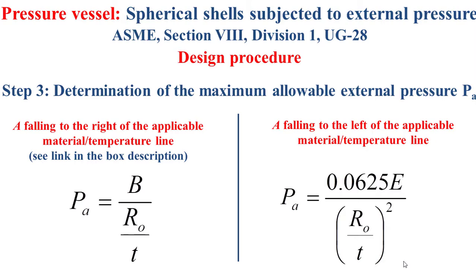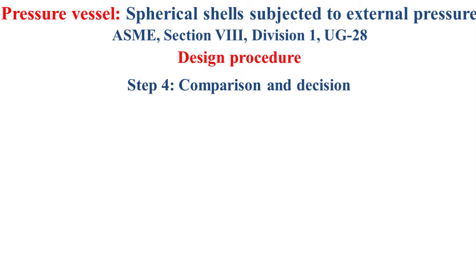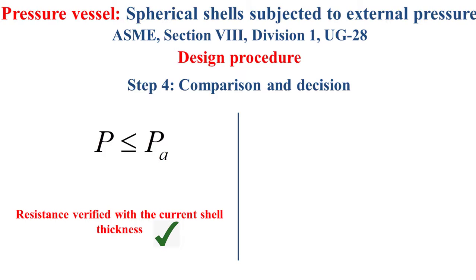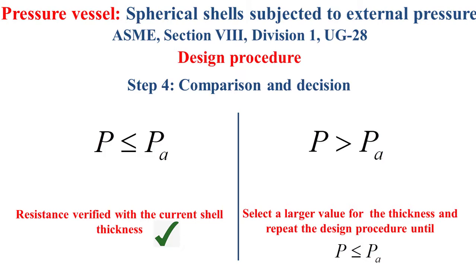It is important to note that E refers to the elasticity modulus of the material. Finally, Step 4 is about comparison and decision. We compare the applied external pressure P to the maximum allowable external pressure PA. Case 1: if P is less than PA, the resistance is verified with the current shell thickness — it's okay. Case 2: if P is higher than PA, the resistance is not verified, and we must select a larger value for the shell thickness and repeat the design procedure until reaching the condition P less than PA.